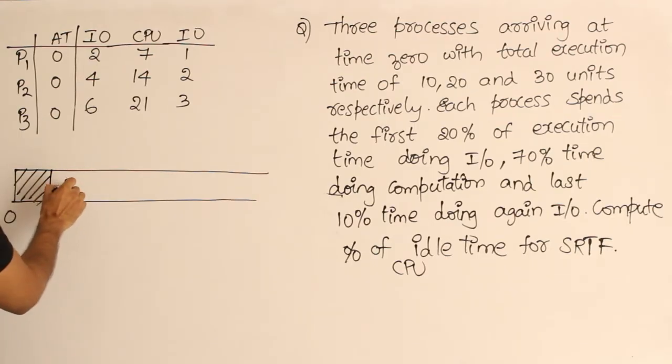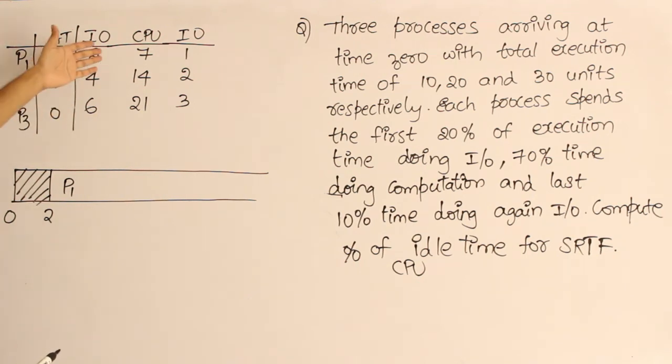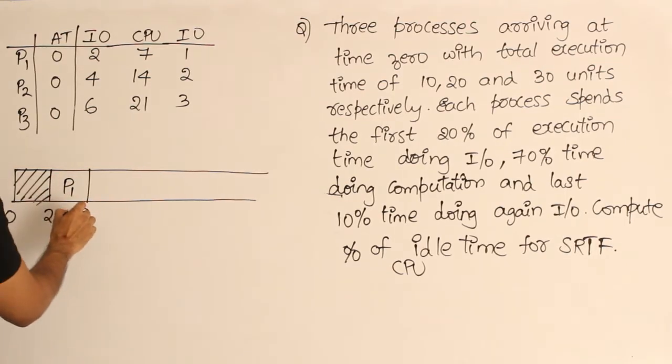Then process P1 becomes available. Therefore P1 becomes available here and I can run it till completion. The reason is this is the smallest job and all jobs are available, so there is no further job smaller than this. You can run it till completion, till 9.